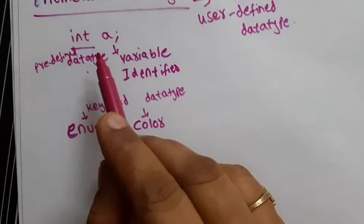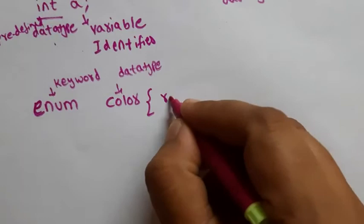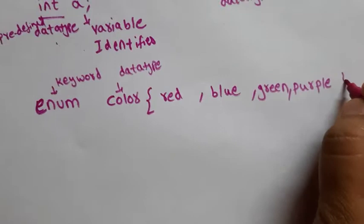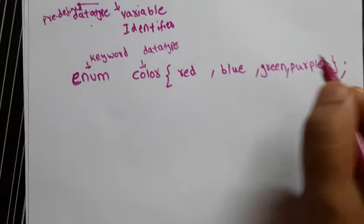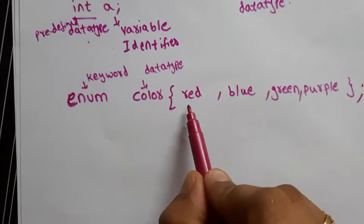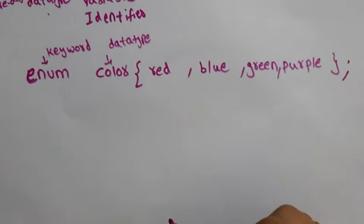For integers you have a list of integer values; similarly, for my data type 'color', I can decide what values it can have. I can list: red, blue, green, purple — inside curly braces, with a semicolon at the end. So 'color' is the data type, and its list of values is red, blue, green, and purple.